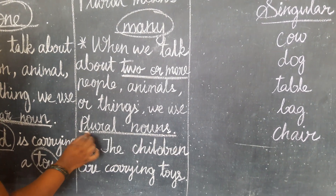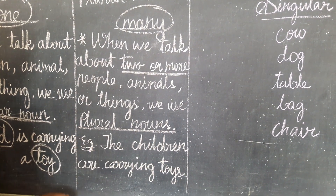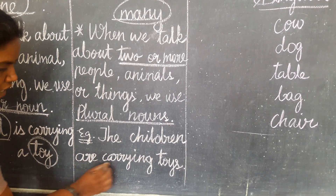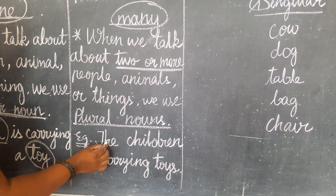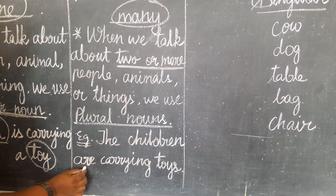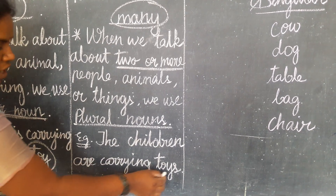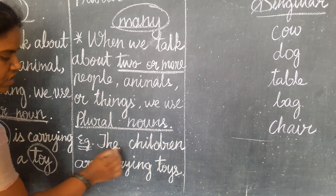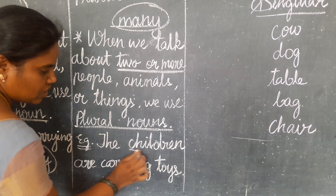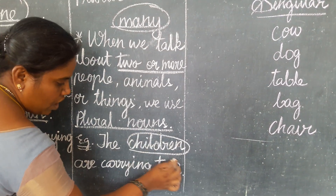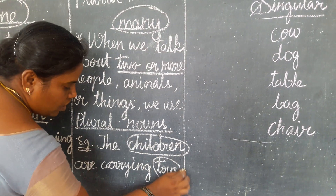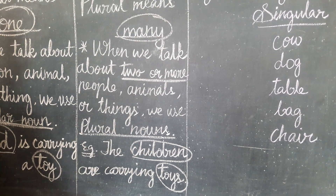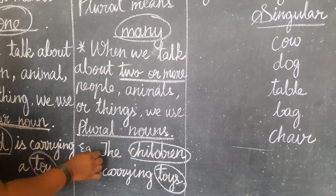Now let's see the example here. The children are carrying toys. Here children and toys are plural nouns. Okay, good children. I hope you understood.